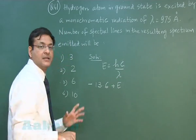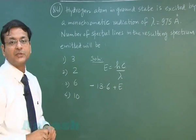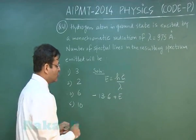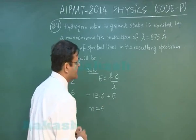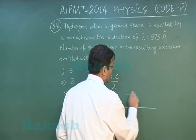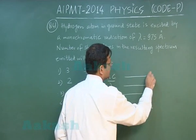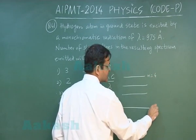Then you will find that the new energy of the electron is suitable for reaching up to n is equal to 4. So it will be reaching from n is equal to 1 to n is equal to 4. This is n is equal to 4 and this is n is equal to 1.